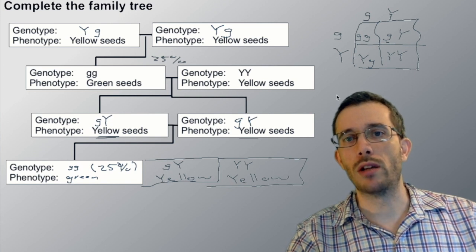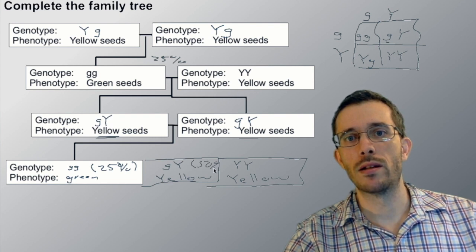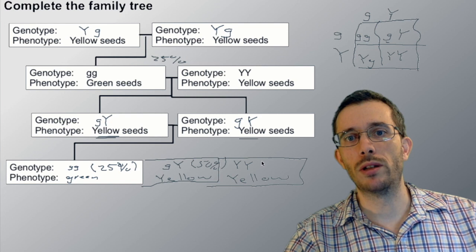Now green-yellow, both of them we have it twice. So this one is happening in 50 percent of the cases. And then yellow-yellow is happening in 25 percent of the cases.